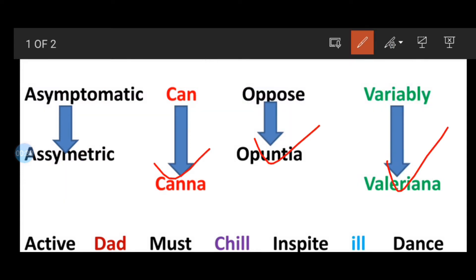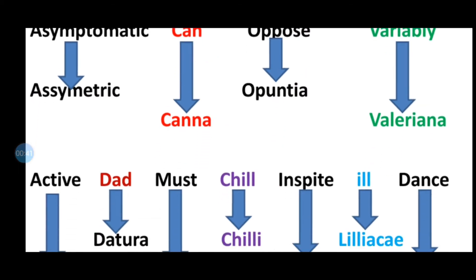Canna, Opuntia, Valeriana. Canna means can, Opuntia means oppose, variably means Valeriana. So these are the examples of asymmetric flower.